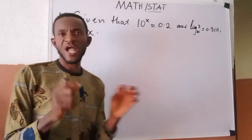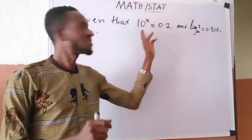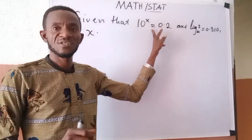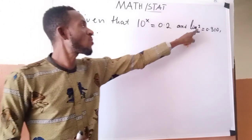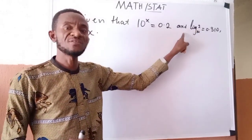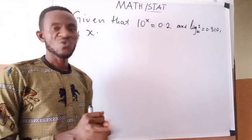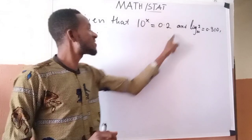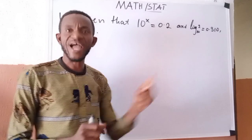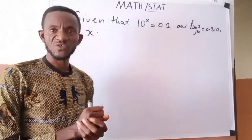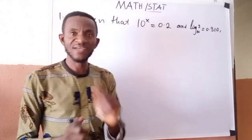The first thing we are going to do is see how we can transform this equation, given to us in the form of indices, into a logarithm. This will enable us to factor in what we are given, which is log of 2 base 10 with value 0.310. Without transforming this equation, that given value can never come in and we can never solve the problem. So first of all, we transform these indices into logarithm.